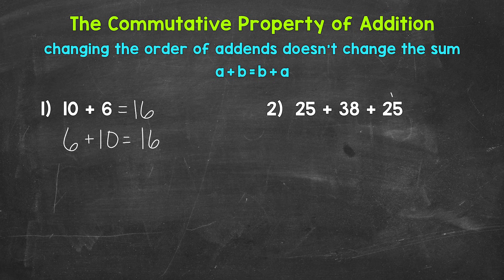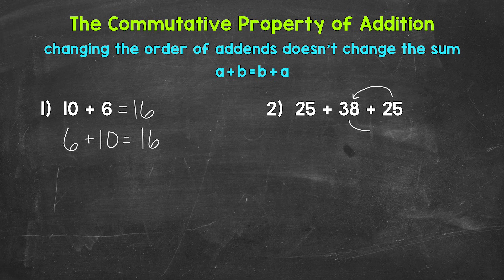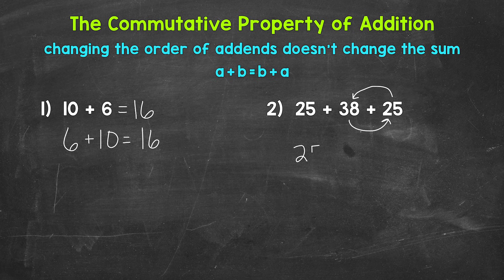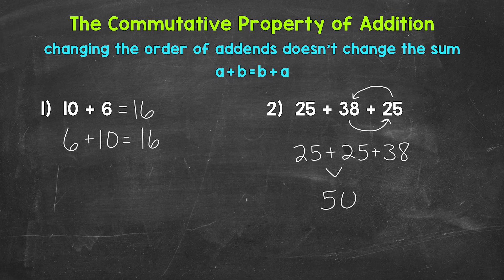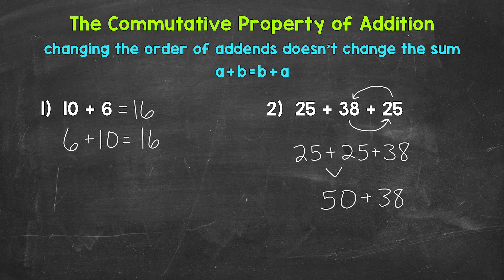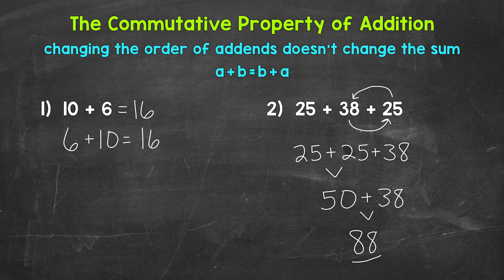For example, let's change the order by switching that last 25 with the 38, so we have 25 plus 25 plus 38. Now we have 25 plus 25, which is simpler to work through than 25 plus 38. 25 plus 25 gives us 50. Bring down the addition sign and the 38, and we end with 50 plus 38, which equals 88.